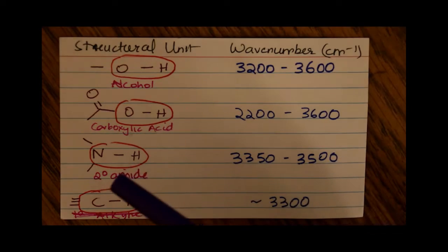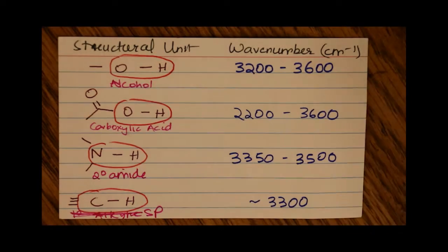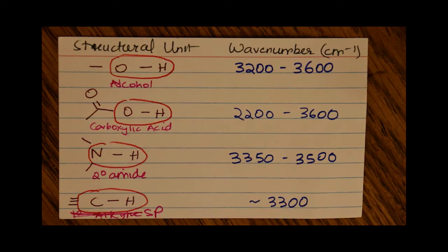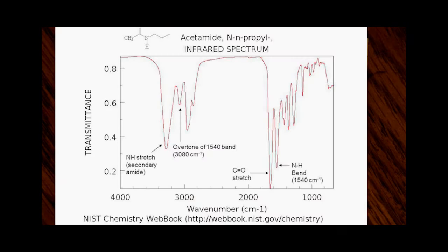For a secondary amide, the range where the peaks show up is between 3350 and 3500, as seen here.